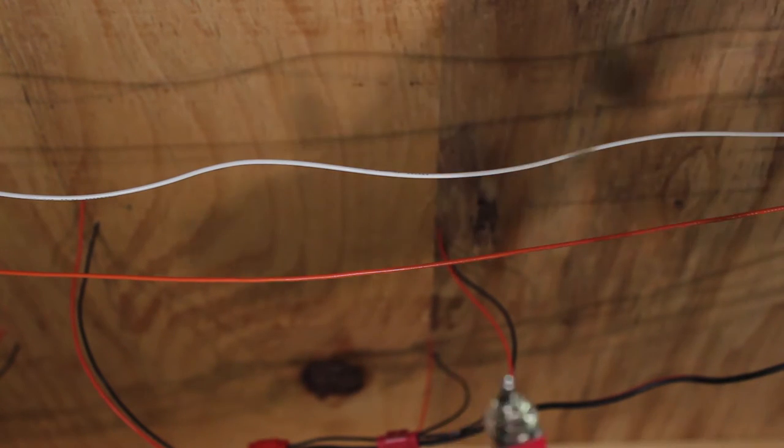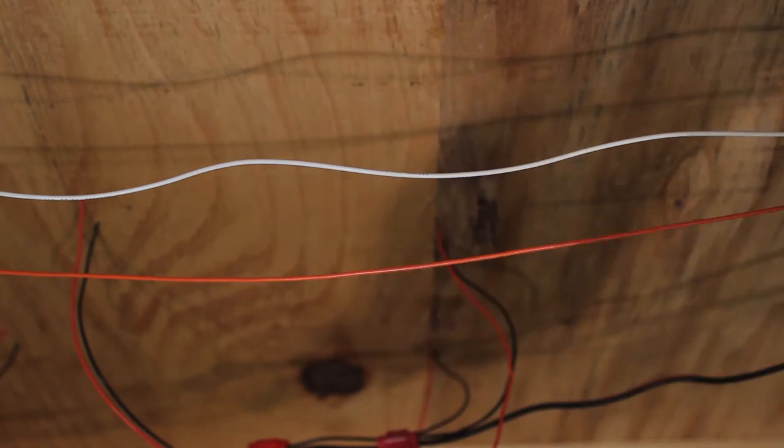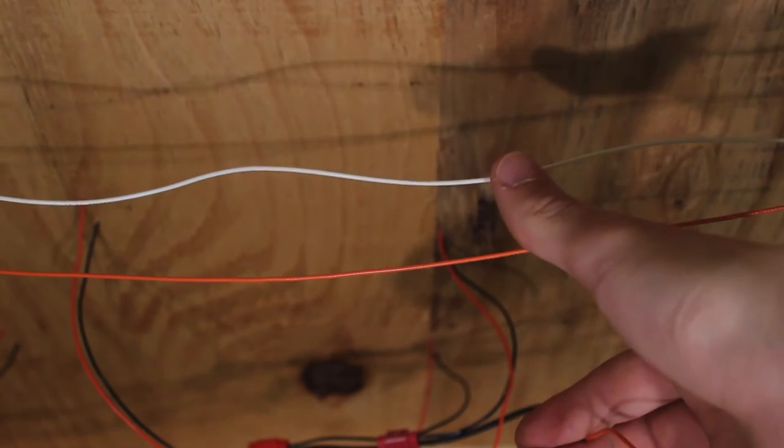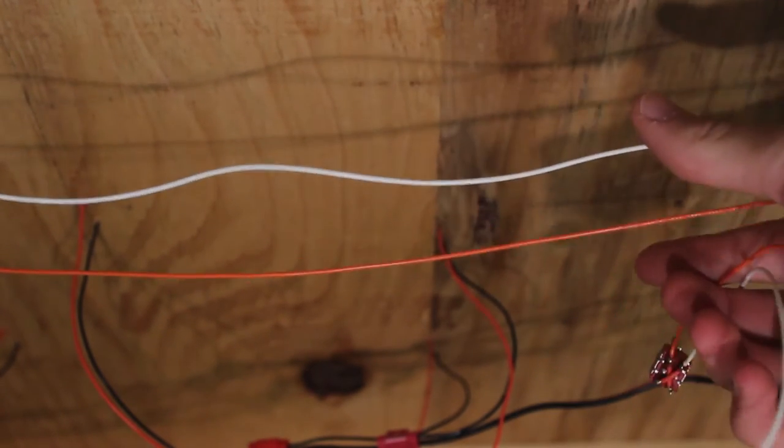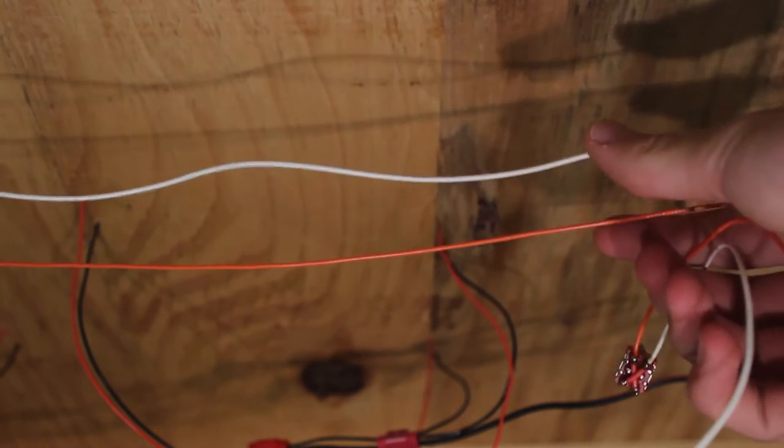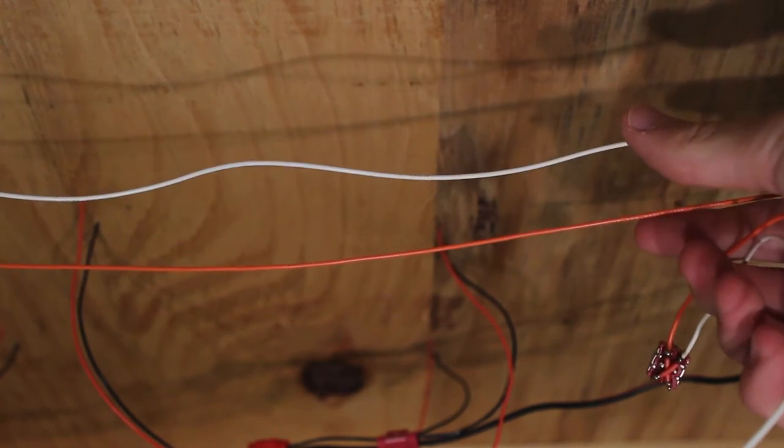You're going to need your toggle switch here. You're also going to need a bus wire for the power, which I have running to one of the tortoise power packs that will power the tortoise switch machines.